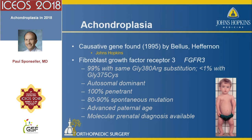Achondroplasia is caused by a gene that was discovered in 1995. It affects fibroblast growth factor receptor protein 3 (FGFR3), and it's almost always the same mutation — 99% of the time it's the same amino acid mutated, which is pretty rare for genetic disorders. It's an autosomal dominant condition, 100% penetrant. Most people get it by a spontaneous mutation, and one of the risk factors is advanced paternal age. Molecular prenatal diagnosis is now possible.